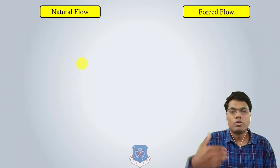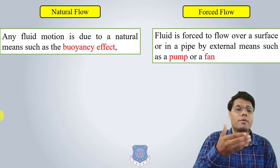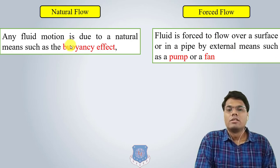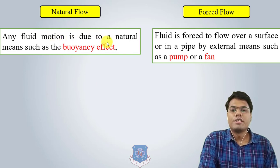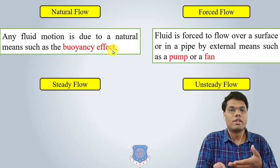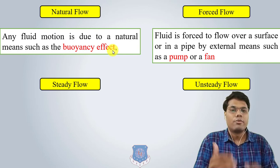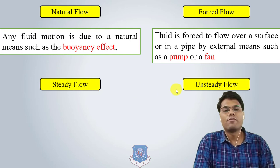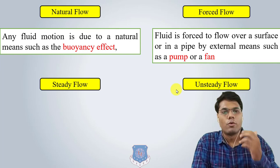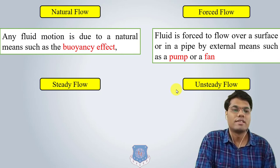Natural flow and forced flow: when external arrangements like pumps and fans are provided, the flow is called forced flow. If the fluid motion is due to natural means such as buoyancy effect — where the heated layer is replaced by denser layers due to density difference — it is natural flow. Steady flow means fluid properties do not change with time; if properties at different locations change with respect to time, it is unsteady flow.